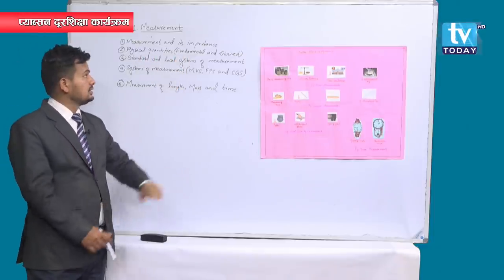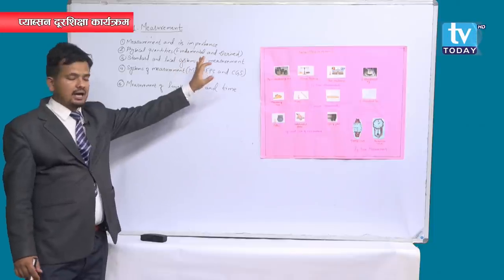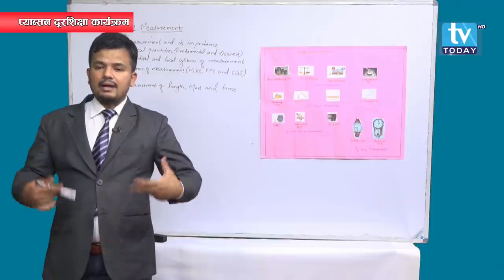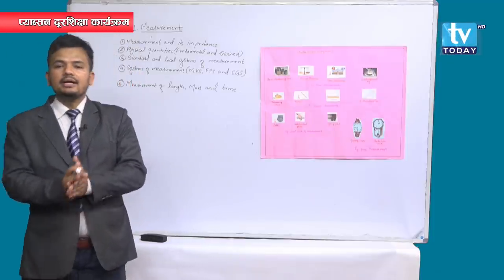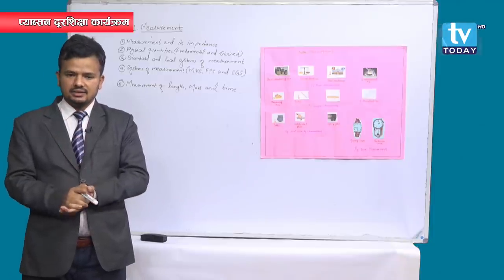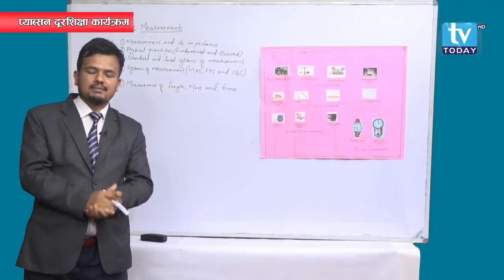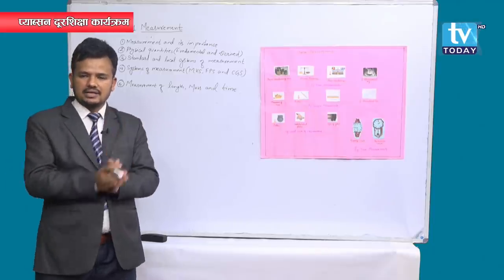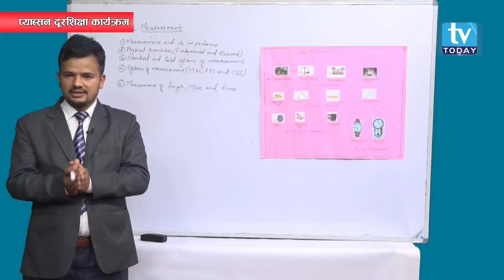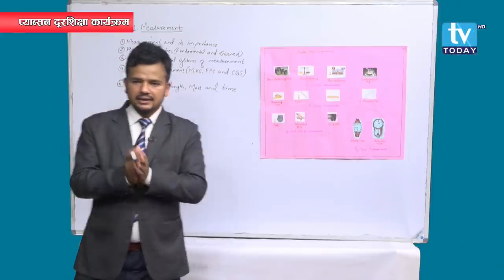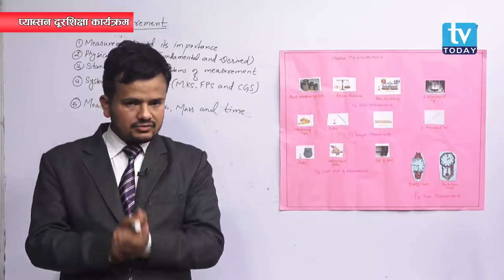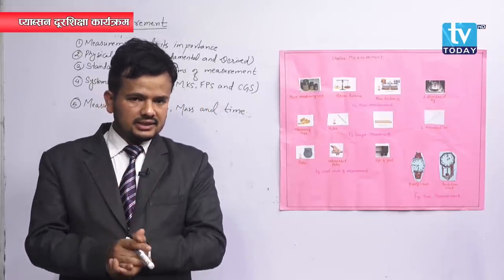Physical quantities can be divided into two groups: fundamental quantities and derived quantities. Fundamental quantities are basic quantities — they are defined first and do not depend on any other quantities. There are seven fundamental quantities: length, mass, time, temperature, amount of substance, and luminous intensity.